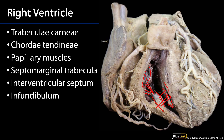We can also see some of the chordae tendineae — we'll get a better view of those when we get to the left ventricle. This region here is known as the conus arteriosus or the infundibulum. It's the smooth area that is leading blood up to the pulmonary valve, which is proximal to the pulmonary trunk.